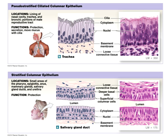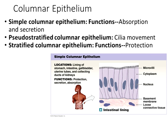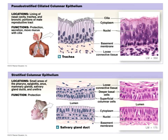In simple columnar, nuclei line up uniformly. In pseudostratified columnar, nuclei are displaced, giving a ribbon-intertwining appearance suggesting multiple layers. In stratified columnar, one to two layers may look columnar, while the inner basement membrane might be more cuboidal for regeneration. Stratified columnar is found in transition areas near openings where stratified squamous epithelium is needed, such as the large intestine transitioning to the rectum.